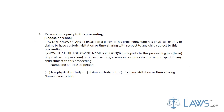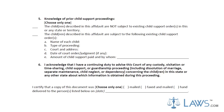In Section 4, indicate whether another person has had or currently has physical custody of the children named in the petition, but are not named parties to this petition. If such persons exist, provide their information.